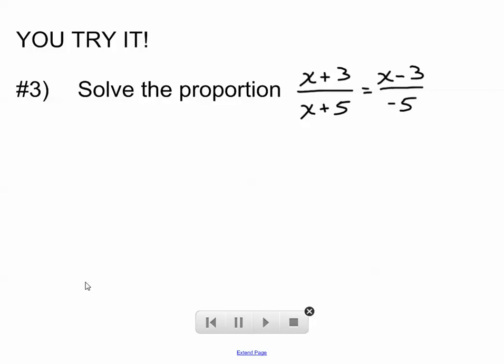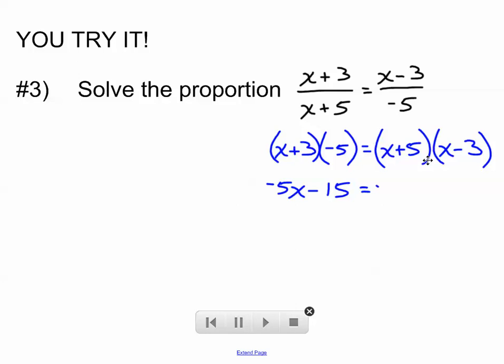Okay, one more for you to try on your own. We've got some quantities here that you'll have to deal with. Press pause, and when you press play, my solution and work will be waiting for you. All right, so the quantity of X plus 3 times negative 5 should equal the quantity of X plus 5 times the quantity of X minus 3. We'll distribute on the left side, negative 5X minus 15. Now on the right, we've got to multiply these two binomials.